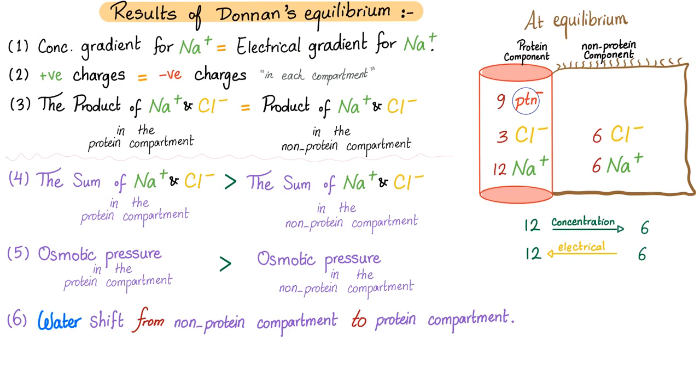Okay Medicosis, but what do I have to gain? Oh, six consequences. All kinds of gains. Three equalities and three inequalities. Let's start with the three equalities. The concentration gradient of sodium equals the electrical gradient of sodium. Yep, this happened exactly at equilibrium. Number two, positive charges and negative charges are equal in each compartment.